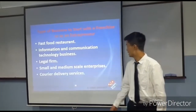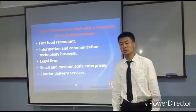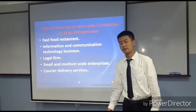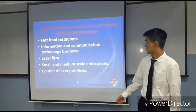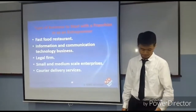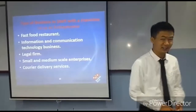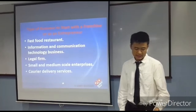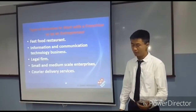The second type is information and communication technology business, such as Powerball and Smart business. The third type is a legal firm — a business made up of lawyers that work together under the family's name.